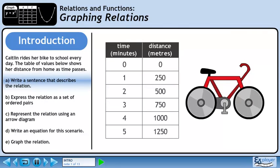Caitlin rides her bike to school every day. The table of values on the right shows her distance from home as time passes.